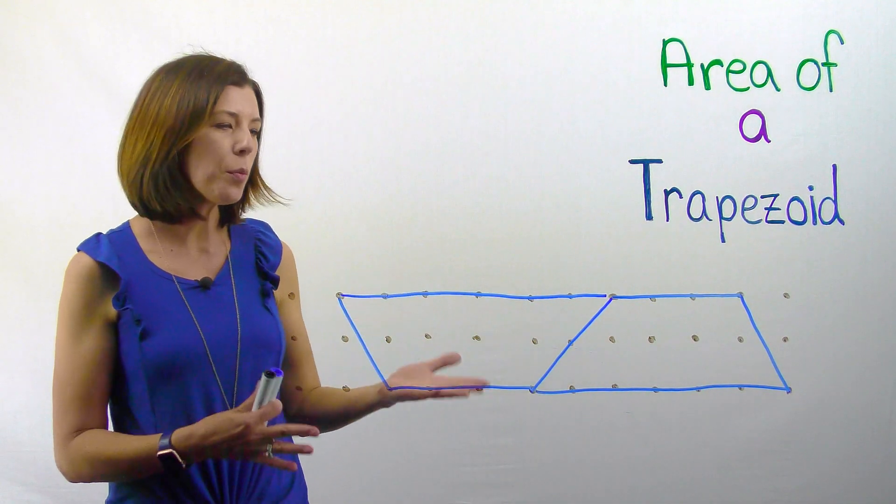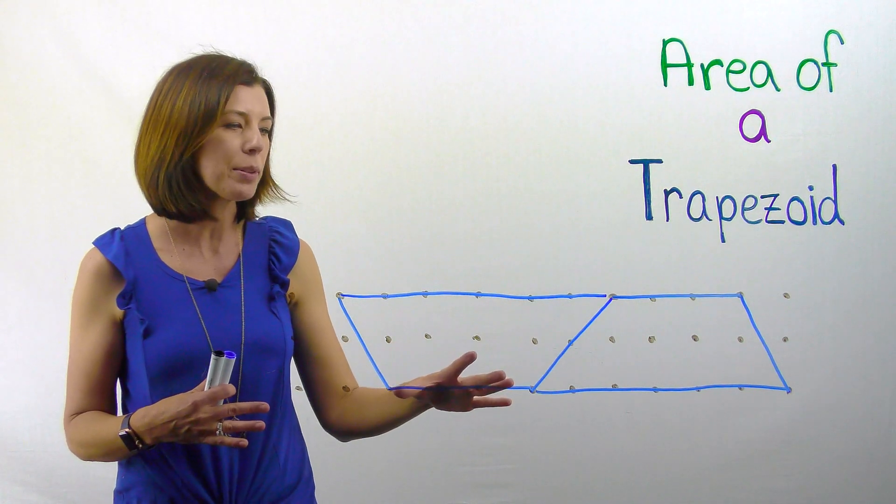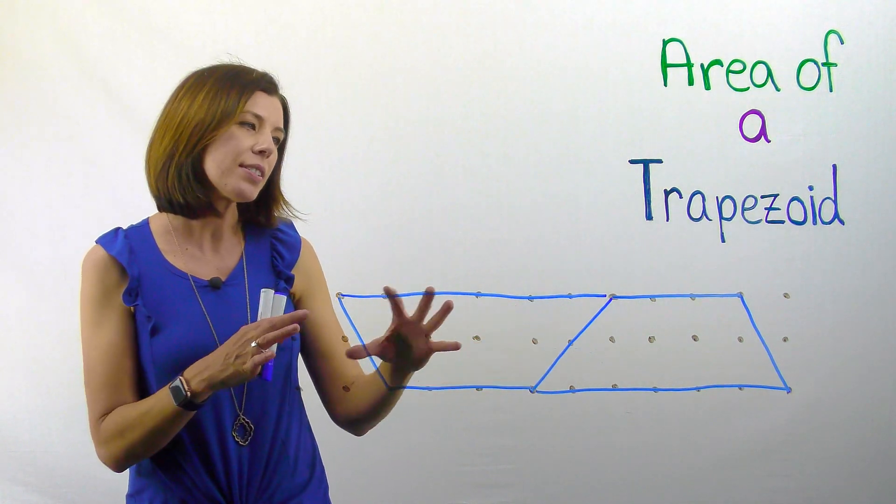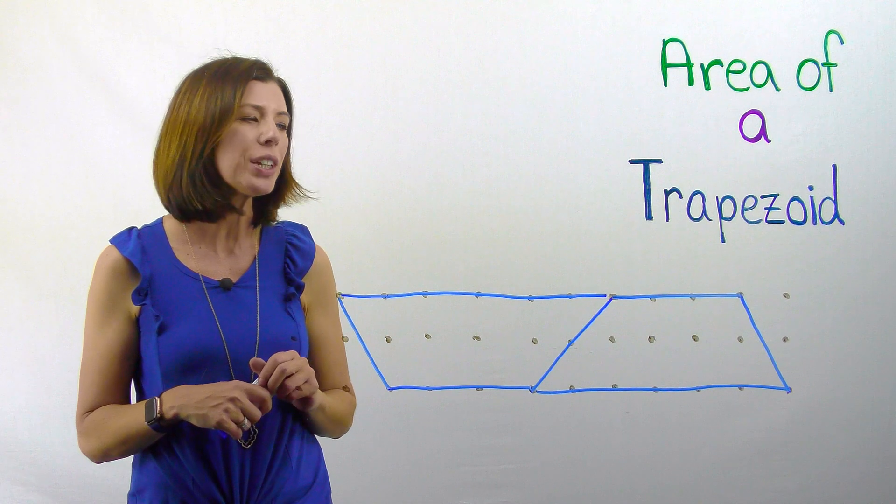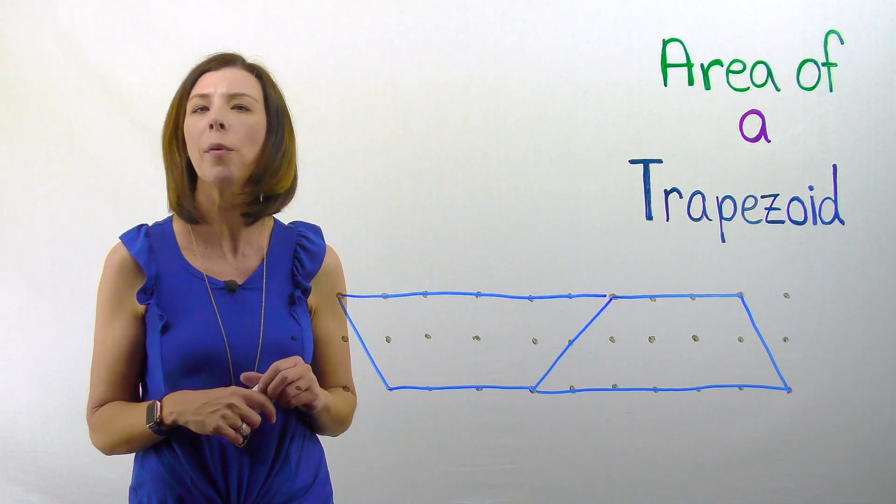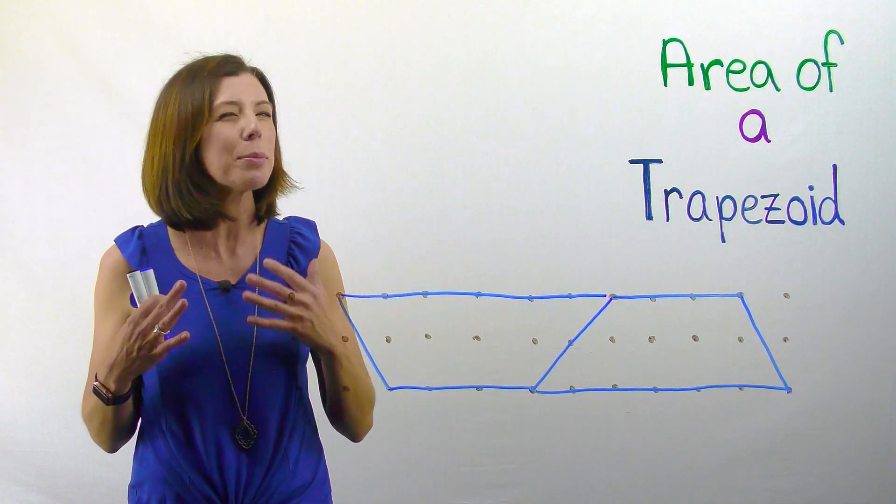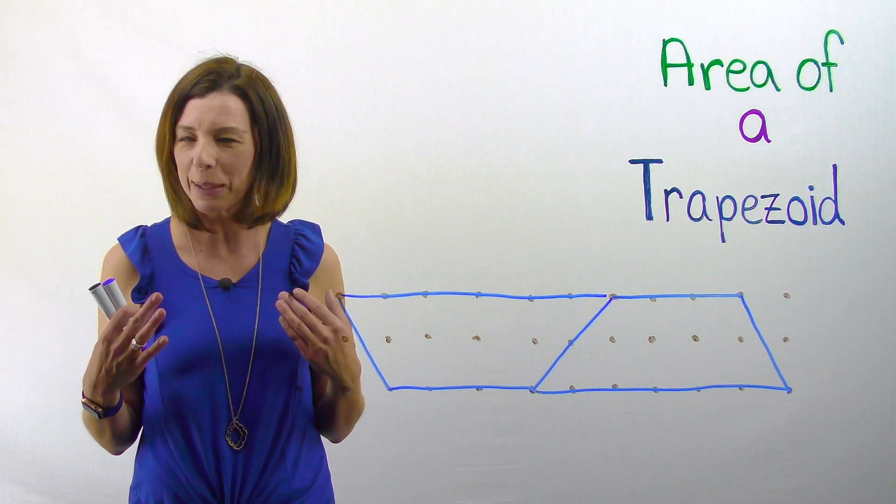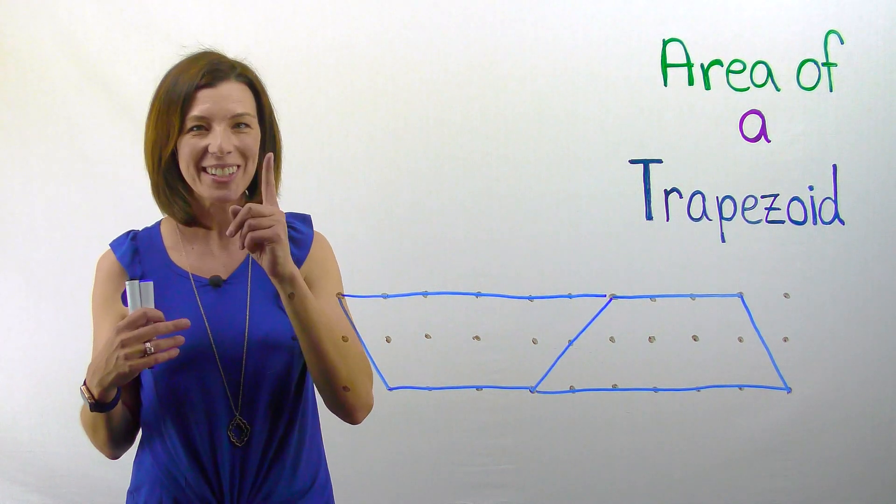You can see here that when I rotate my two trapezoids, I can make this parallelogram sort of looking shape to it, right? Okay. We're coming back to parallelograms. Are you noticing a theme here? There's a reason why we started with that one.